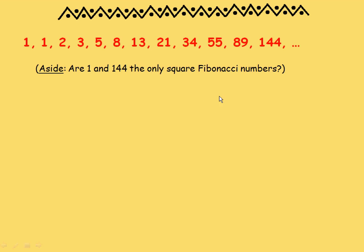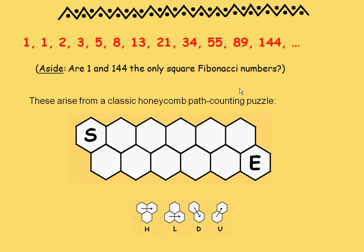I want to talk about one particular appearance of the Fibonacci numbers, and that's from a classic path counting puzzle. I want to talk about a honeycomb. Here's a two-row honeycomb — how many ways can I walk from start at the left to end at the right? Each path must go from one cell to a neighbouring cell, and each motion must have some rightward component to it. I can take horizontal steps on the upper or lower level to the right, or diagonal steps, but I can never go leftward. So how many paths are there from start to end in this picture? You can start drawing paths, get out your coloured pencils, and you'll soon find the number of paths seems to be overwhelming.